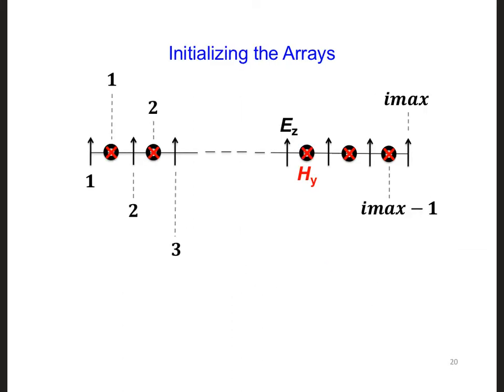Okay, so we want the ez array to be able to store imax numbers and the hy array to store imax minus 1 numbers.